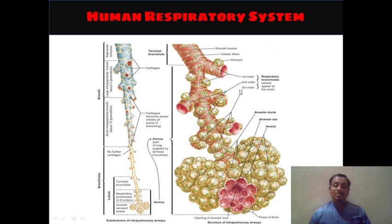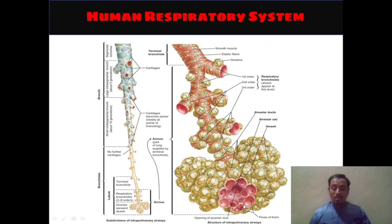The first order, second order, and third order respiratory bronchioles are shown here — respiratory bronchiole level is where alveoli appear. At the end, alveolar ducts form to connect the alveolar sac. The alveolar sac contains alveoli, which contain various small grape-like structures where each grape has a pore-like structure known as pores of Kohn — a structure of intrapulmonary airways.